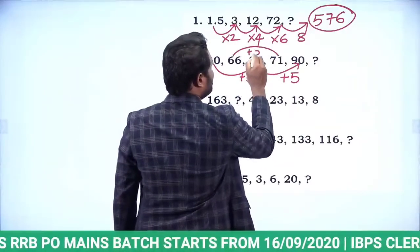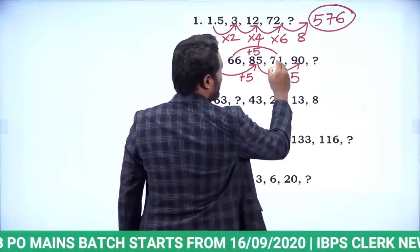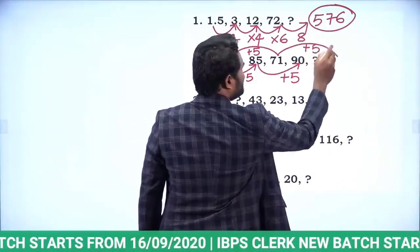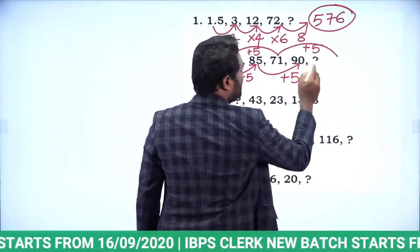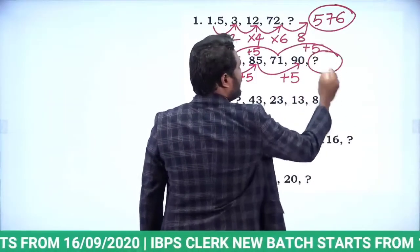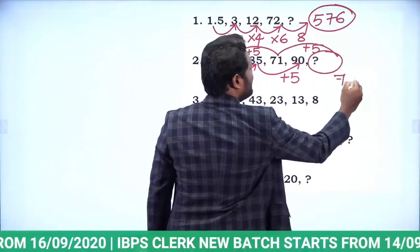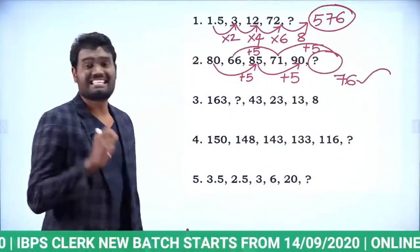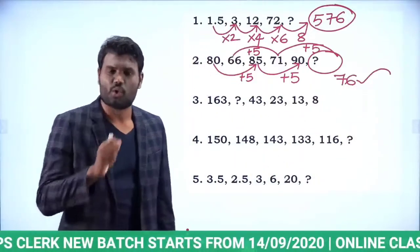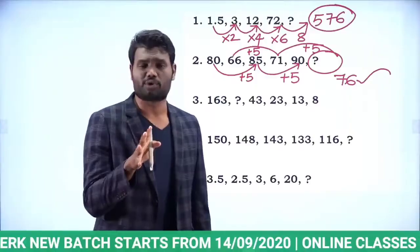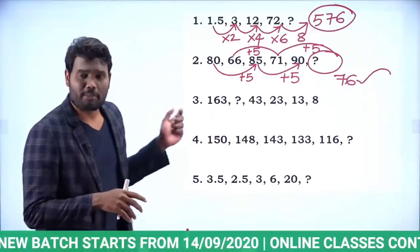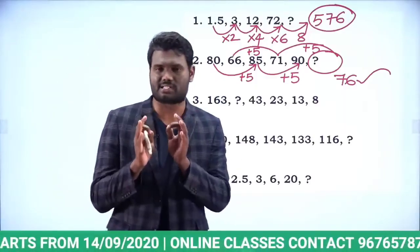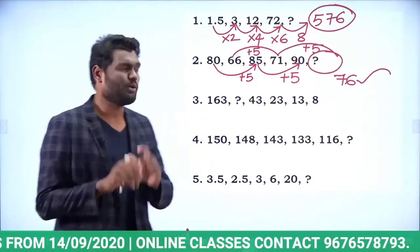If you observe: 80 plus 5 is 85, and 85 plus 5 is 90. Similarly, 66 plus 5 is 71, and 71 plus 5 is 76. So the answer is 76 — a simple alternate series.